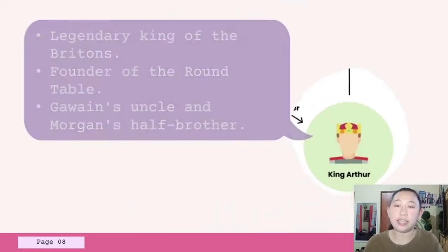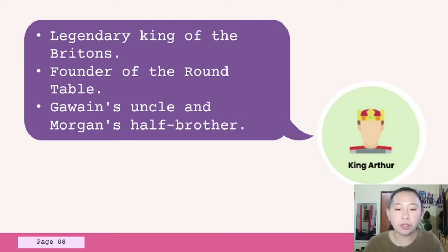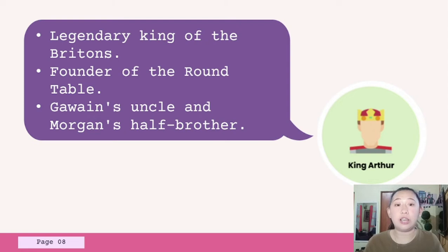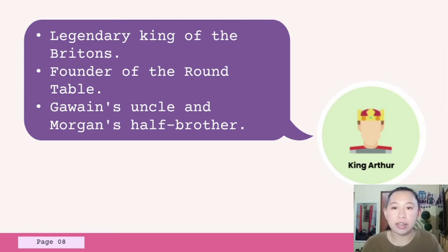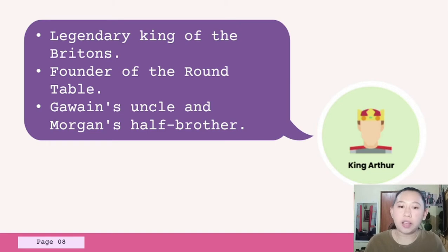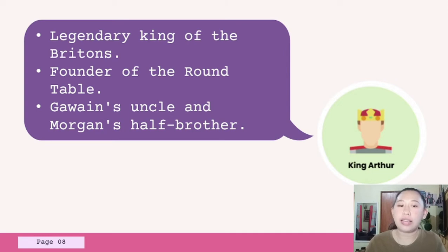Our last character is King Arthur. He is the legendary king of Britain and founder of the Round Table. He is Gawain's uncle and Morgan's half-brother. Arthur's refusal to eat until he hears a fantastic tale shows the petulance of youth, as does Arthur's initial stunned response to the Green Knight's challenge. However, like a good king, Arthur soon steps forward to take on the challenge. At the end of the story, Arthur joins his nephew in wearing a green girdle on his arm, showing that Gawain's trial has taught him about his own fallibility.